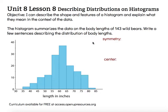We can look at symmetry, center, and spread. The histogram summarizes the data on the body lengths of 143 wild bears. Write a few sentences describing the distribution of body lengths. So let's look first at the symmetry of this data.